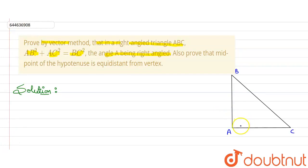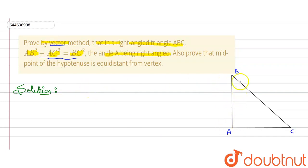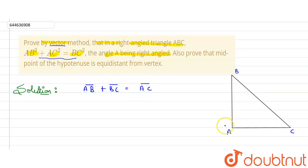Let me draw the figure. This is triangle ABC with the right angle at A. We need to prove this using vector method. So AB, BC, and AC are the vectors. We know that the resultant of two vectors AB vector plus BC vector equals AC vector.